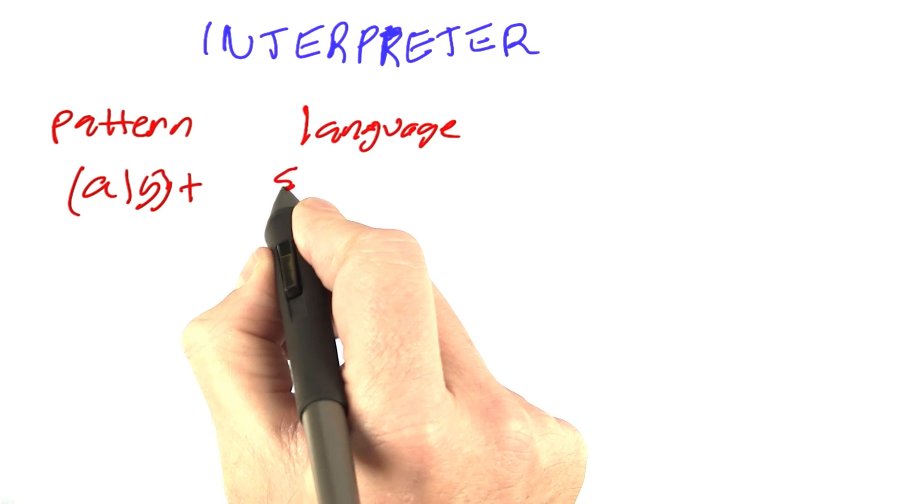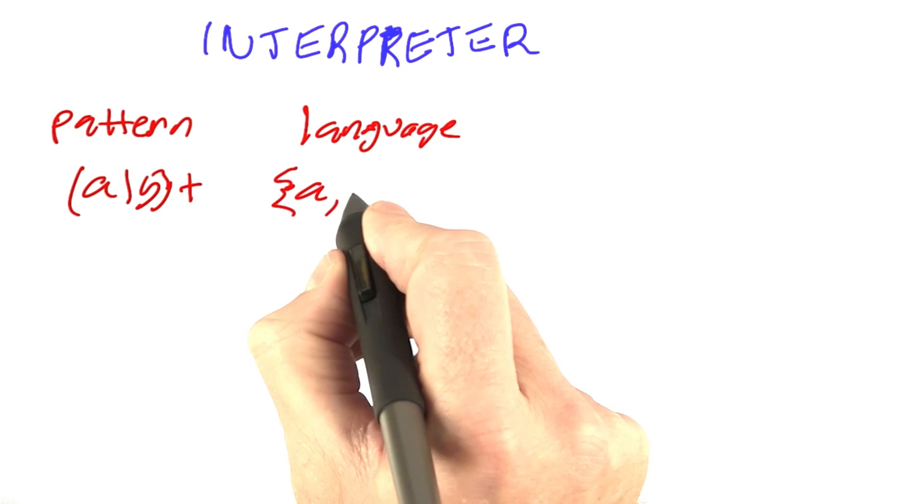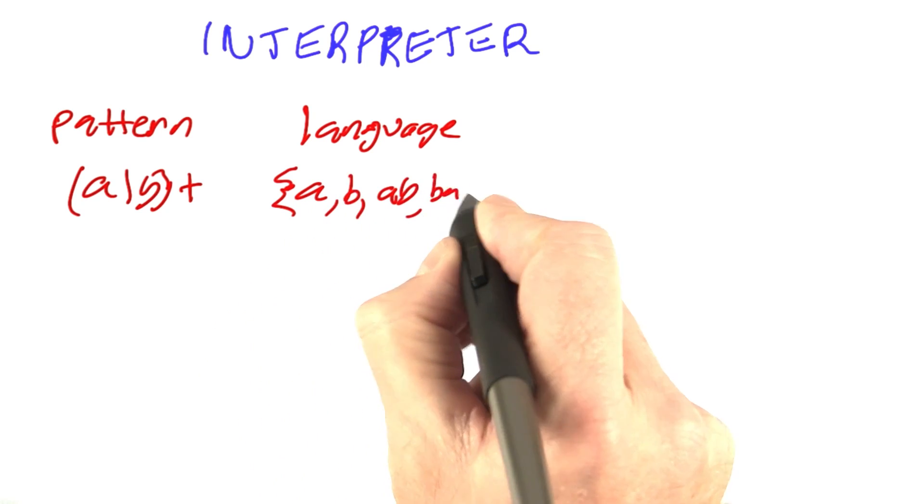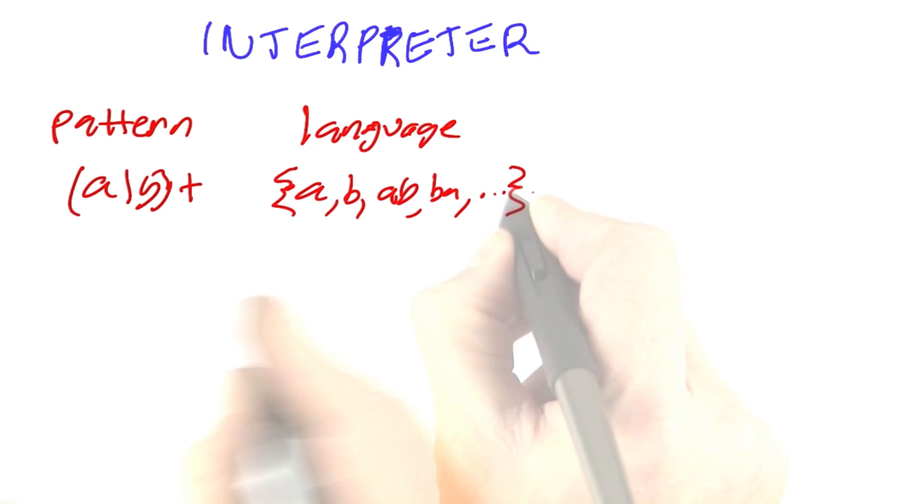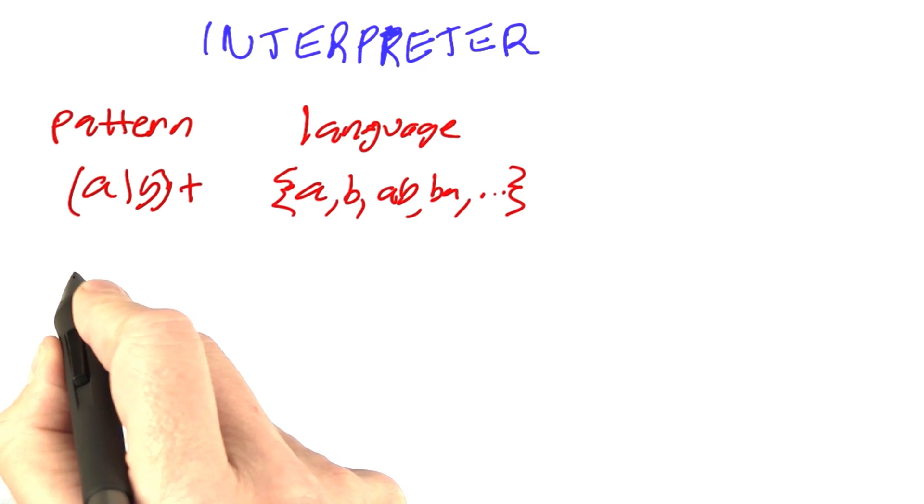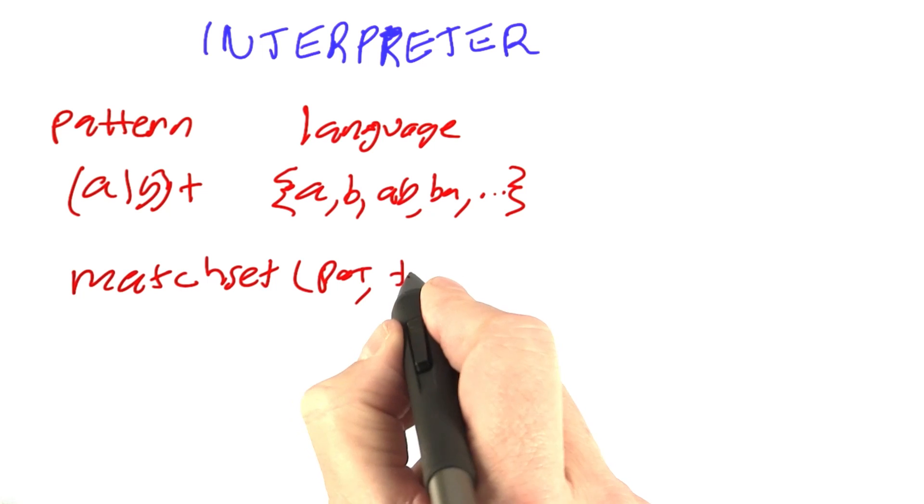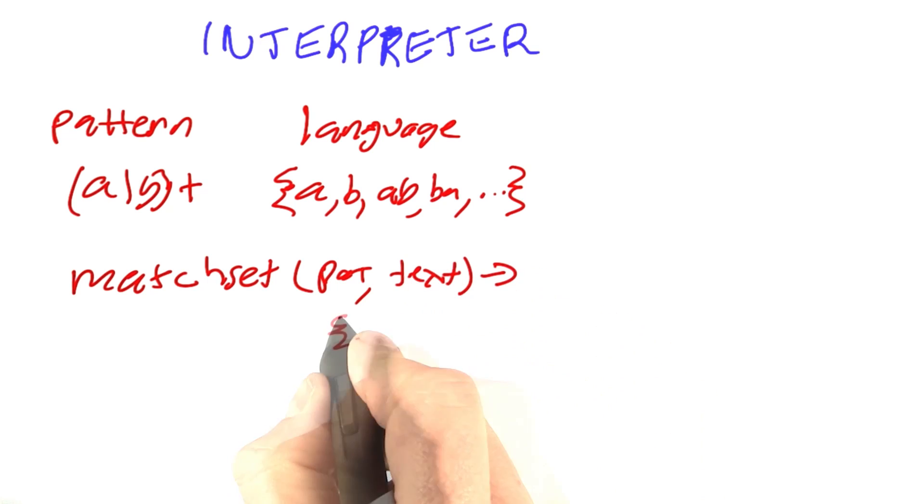A language is a set of strings like A, B, AB, BA, and so on, defined by that pattern. Then we have interpreters like MATCHSET, which in this case takes a pattern and a text and returns a list of strings or a set of strings.